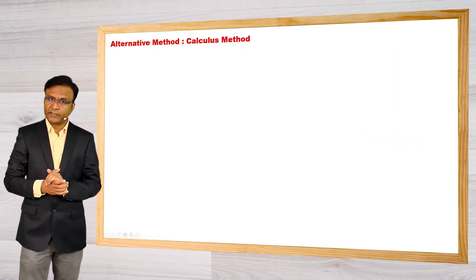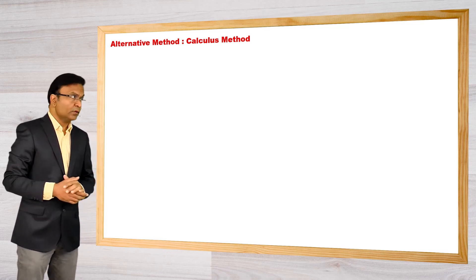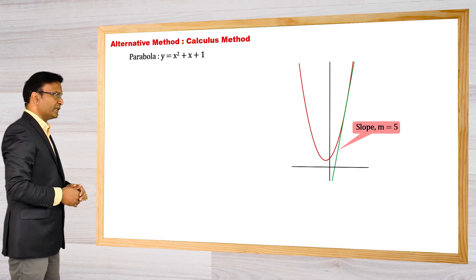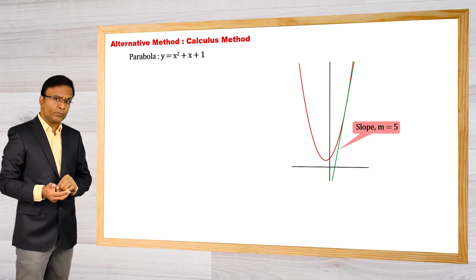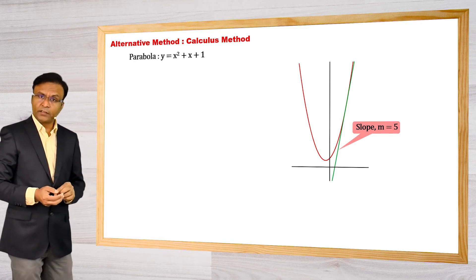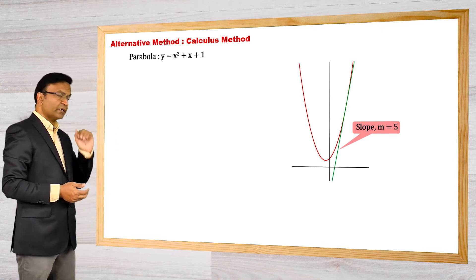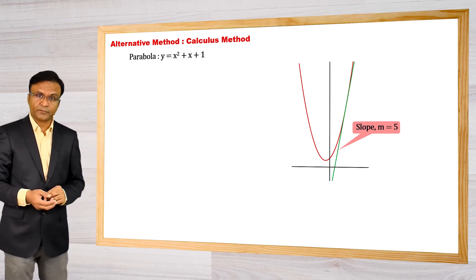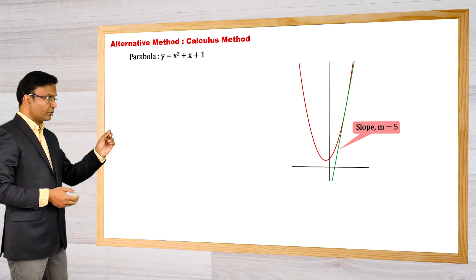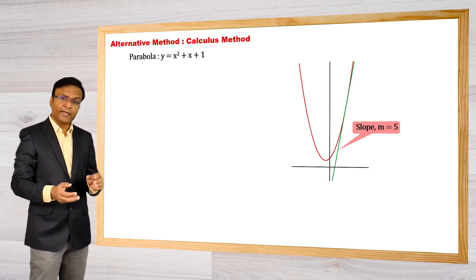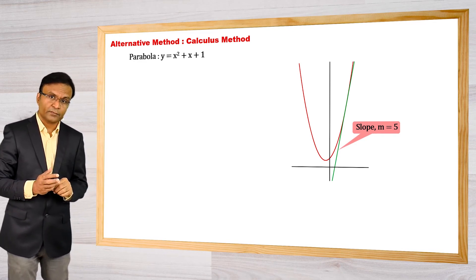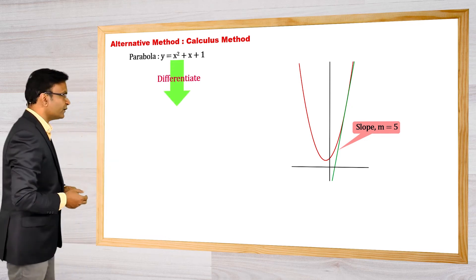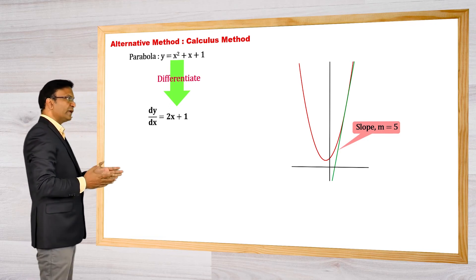Let us now find this equation of tangent using the calculus method. We have this parabola and we are drawing a tangent line on it. Of course, the slope of this tangent is 5. The slope of the line is given, so we can find the corresponding point of contact, which is point P on the curve. We will find this point using dy by dx. We can say the value of dy by dx to the curve at point P is 5. So let us get dy by dx for the curve. Differentiating with respect to x, we get dy by dx is equal to 2x plus 1.